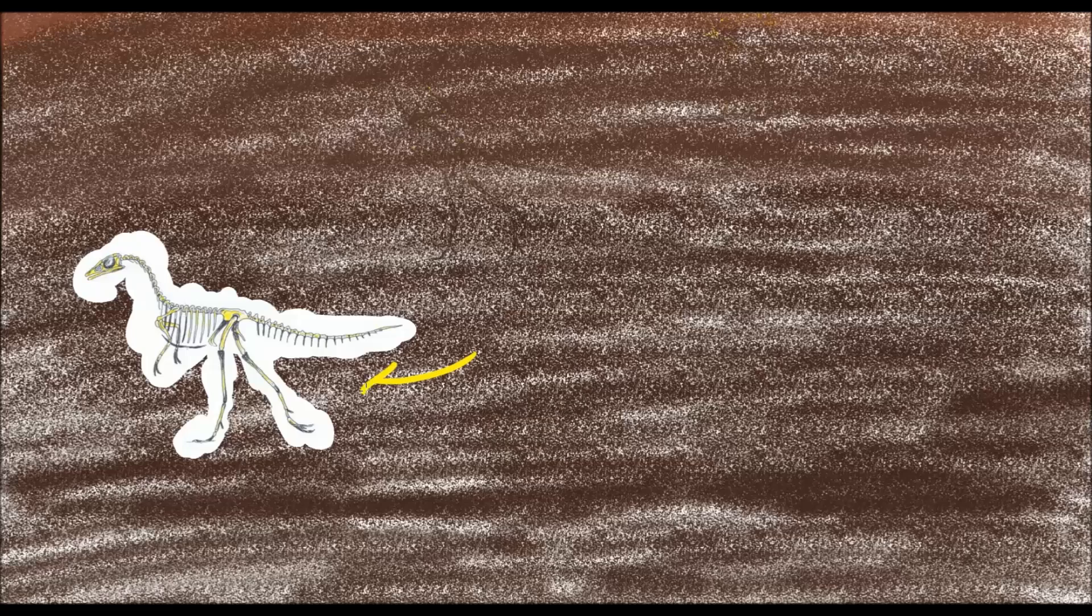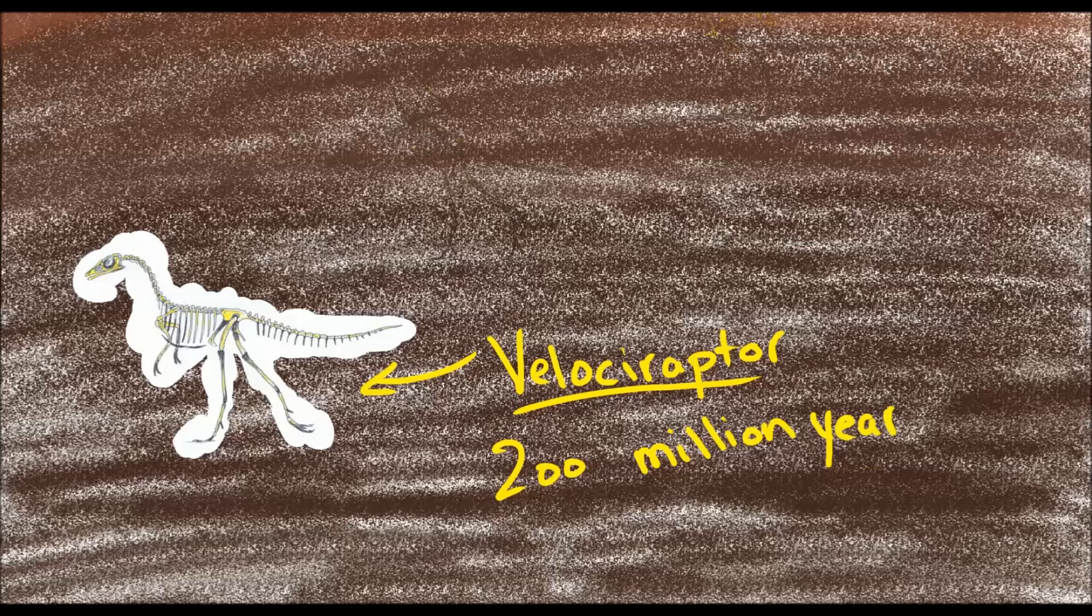And you might recognize this one. It belongs to a dinosaur that we call Velociraptor. And Velociraptor, like other dinosaurs, is really old. It lived about 200 million years ago. That's really a long time ago.